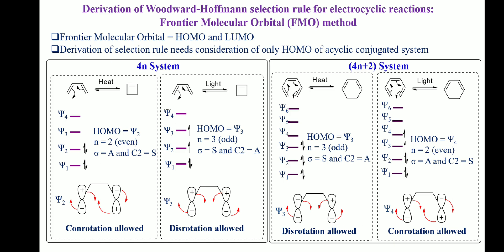Under photochemical conditions, one of the two electrons from psi2 enters psi3, making psi3 the HOMO. Since n equals odd for psi3, it has a sigma plane and no C2 axis of symmetry. The structure of the HOMO is such that the orbital lobes on the terminal carbons must rotate in the opposite direction to form the cyclic product — so the allowed rotation is disrotation.